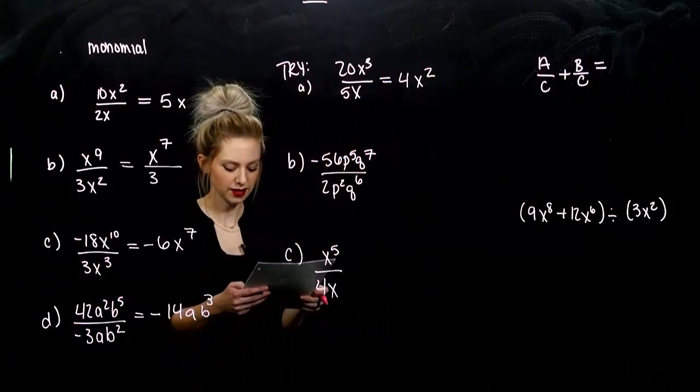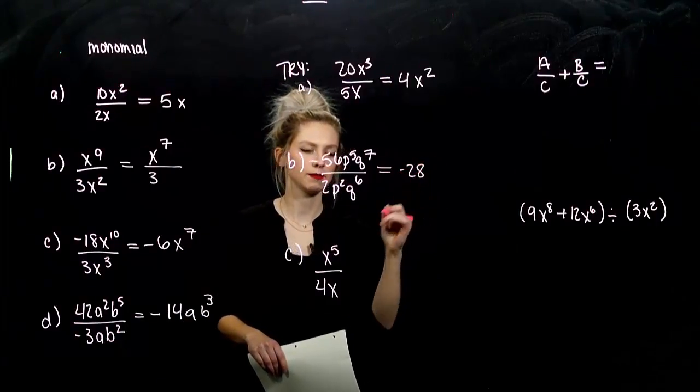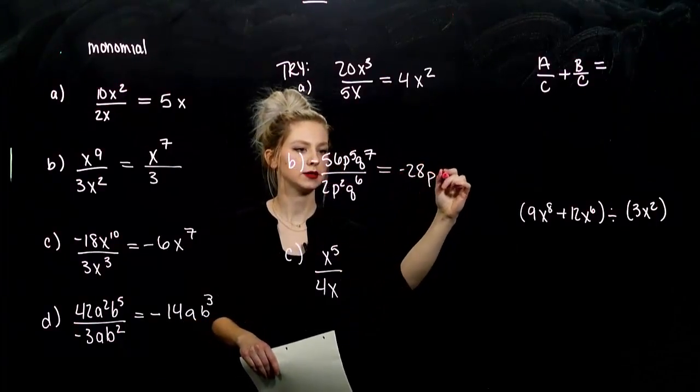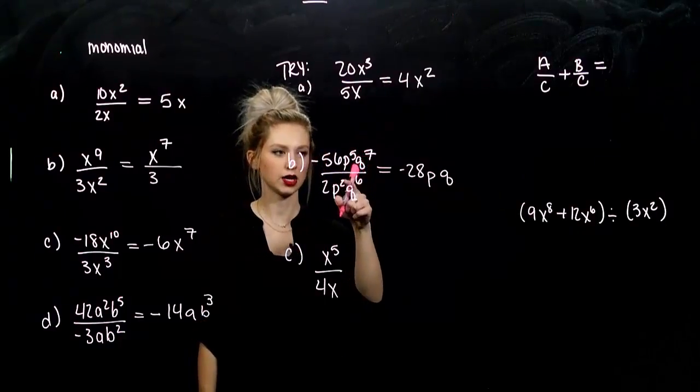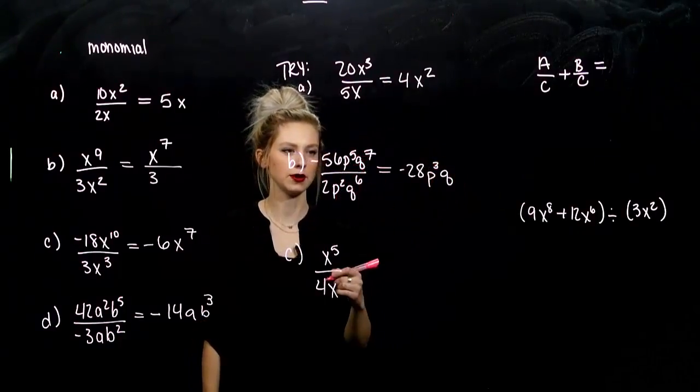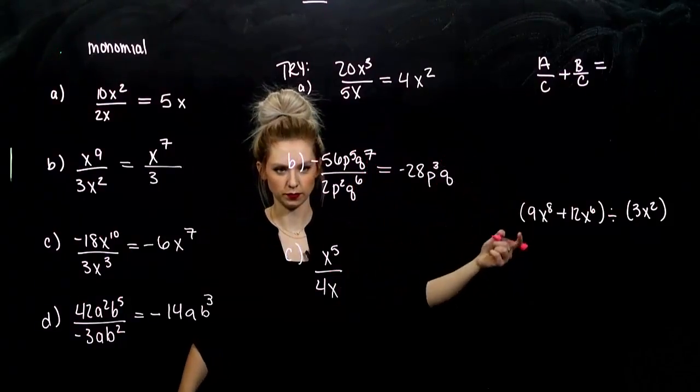For part b, negative 56 divided by 2 will give me negative 28. How many p's and how many q's? So, my p's. I've got 5, taking away 2. I'm left with 3. And 7, take away 6. I'm left with 1. We don't have to write it.